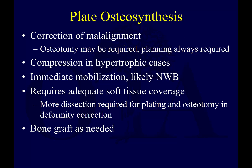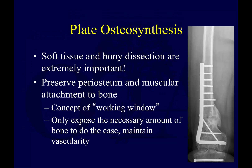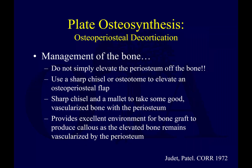Plate osteosynthesis is great for correcting malalignment — if an osteotomy is needed, you can plan and fix it with a plate. In a hypertrophic case, you want to compress and provide stability. You can immediately mobilize the patient. You do need adequate soft tissue coverage; without it, infection rates rise. Soft tissue and bone dissection are important: preserve the periosteum and muscular attachment to bone, expose only what you need. Many surgeons teach an extraperiosteal dissection, addressing the non-union right at the site without stripping everything else.